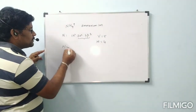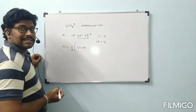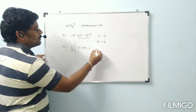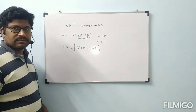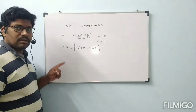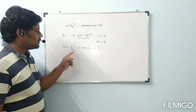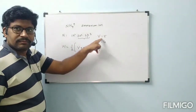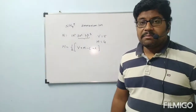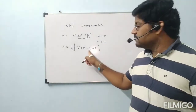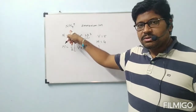The formula is: H = ½(V + M - C + A). V is the number of valence electrons in the central atom. M is the number of monovalent atoms bonded to the central atom. C is the numerical value of the charge if it is a cation. Here NH4+ is a cation, so C = 1.